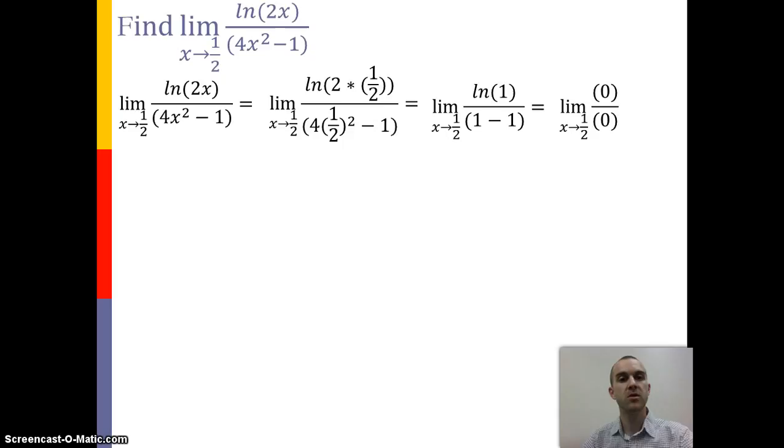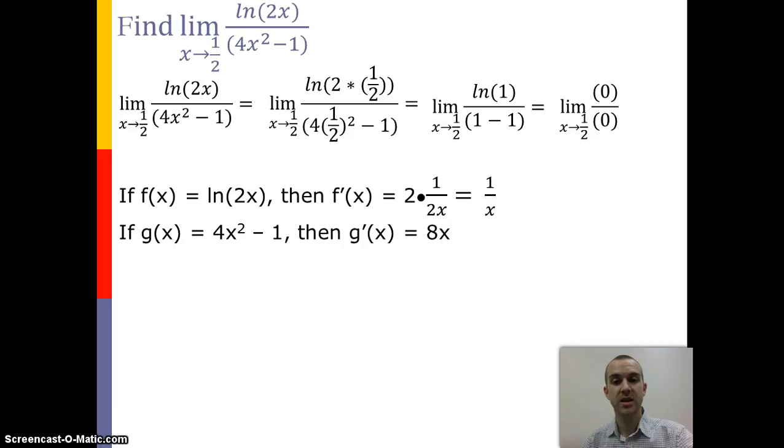But if we looked at the first derivative of each of these functions, the first derivative of the natural log of 2x would be 1 over x. The first derivative of 4x squared minus 1 is 8x.